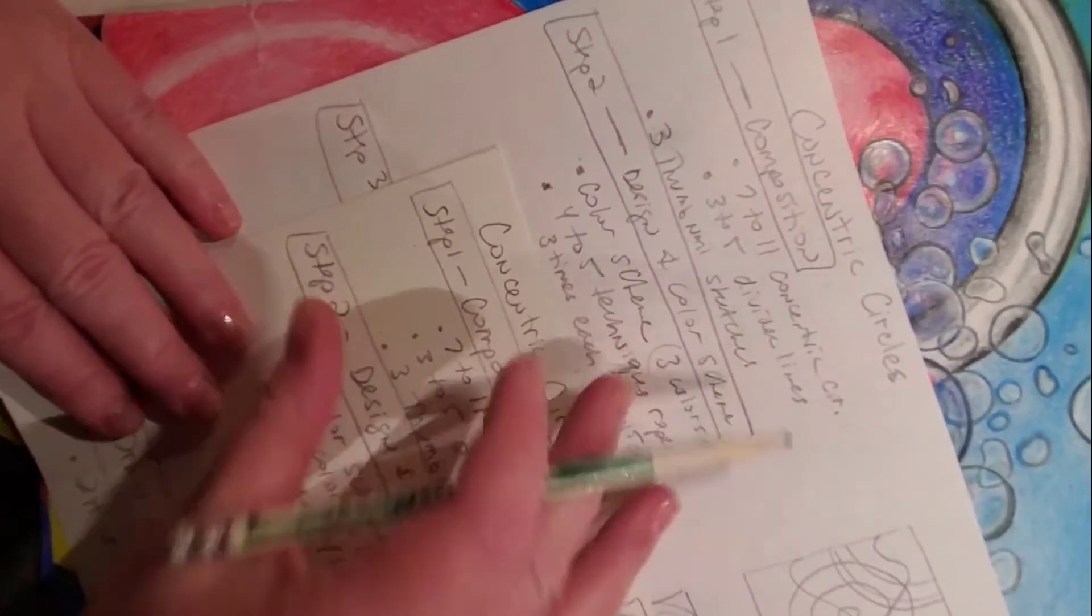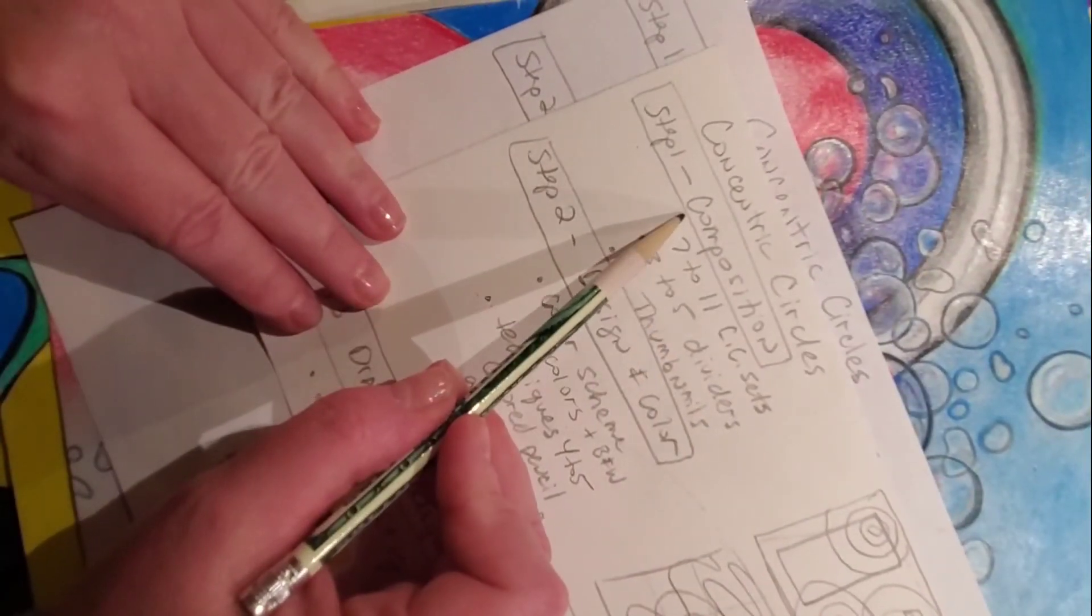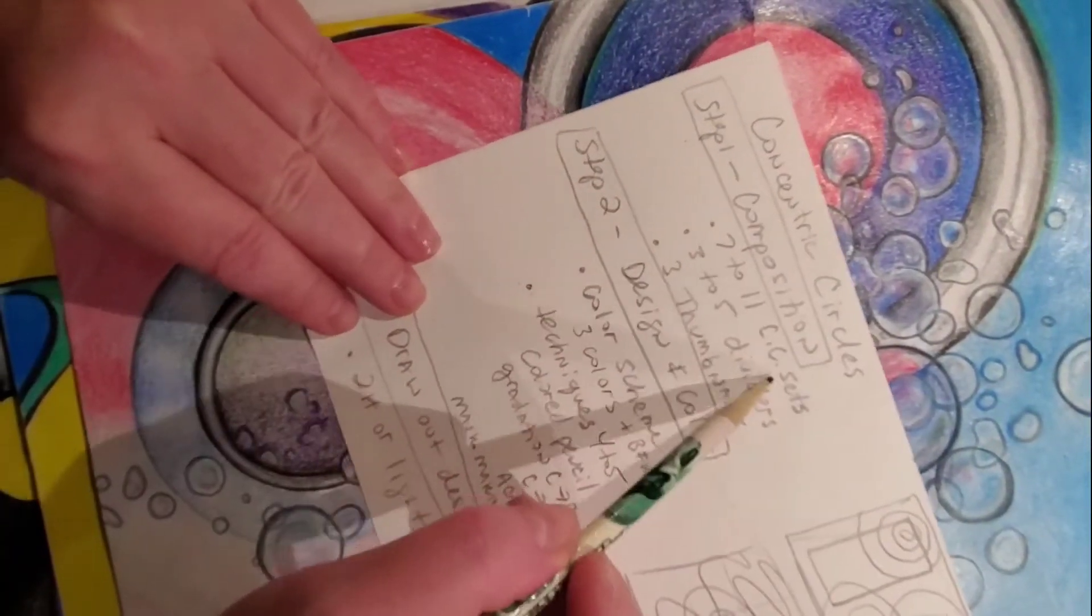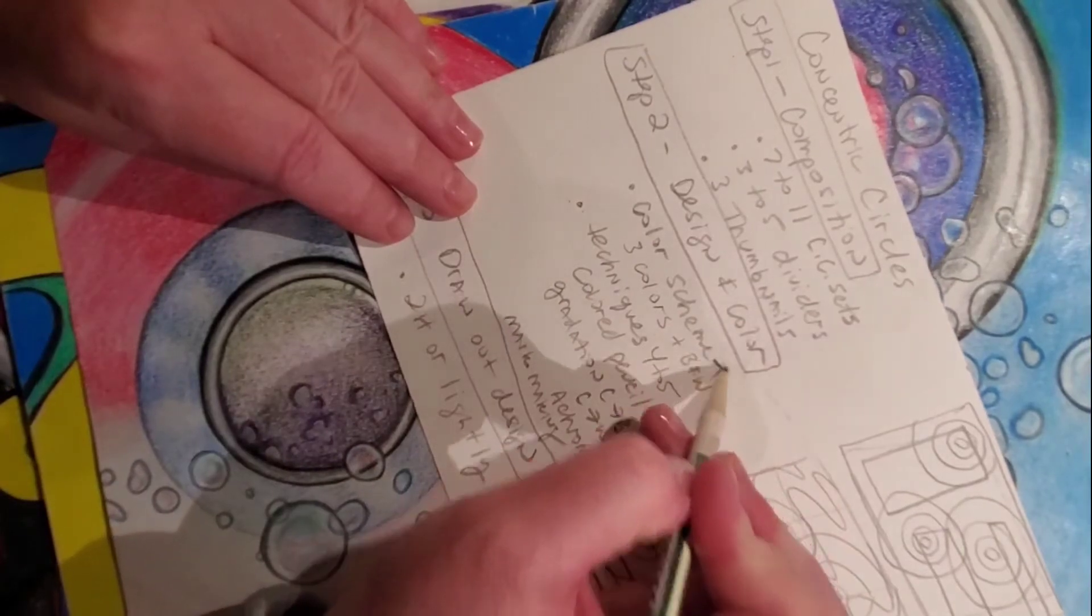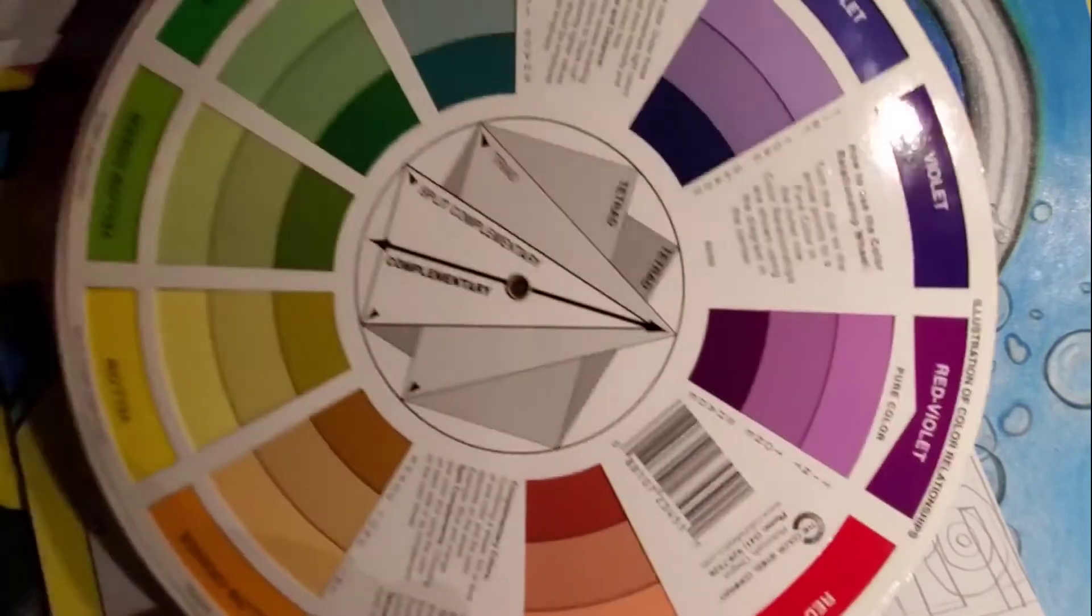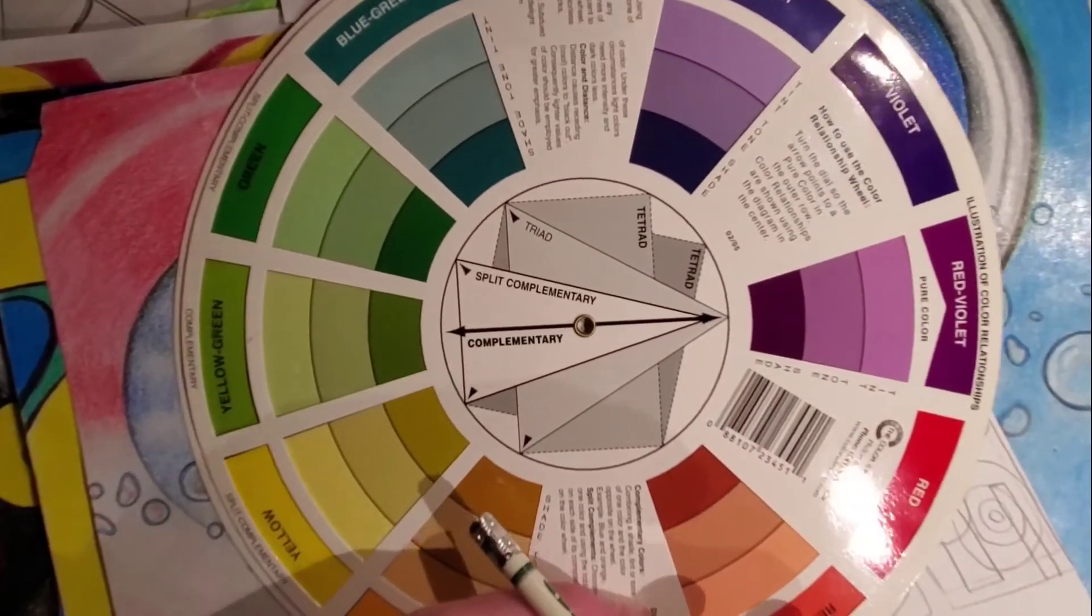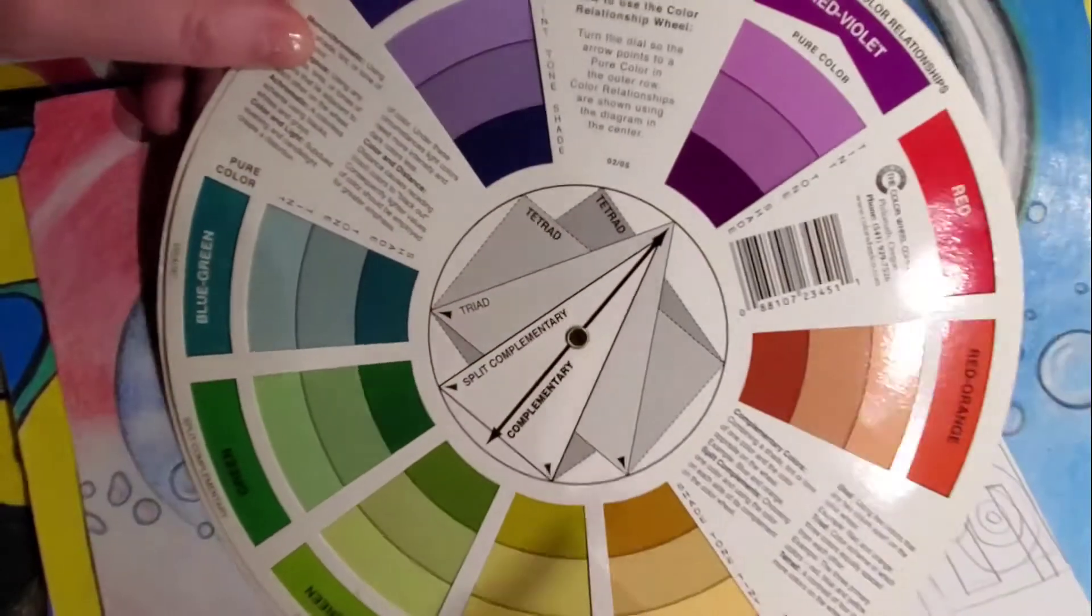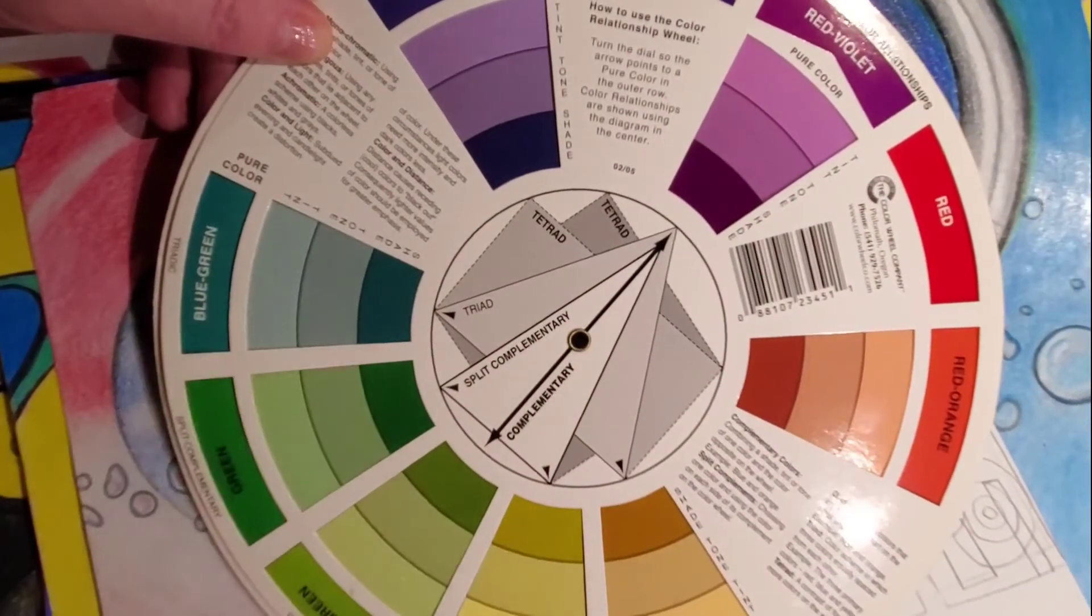All right, so I'm liking that. Once you have done thumbnail sketches, that's when we need to come back to step number two. Once we've done our compositions and our thumbnail sketches, we're coming back to design and color scheme. So I want you to think about your color scheme.